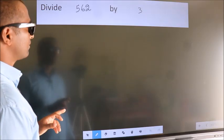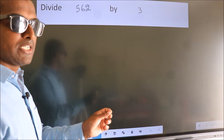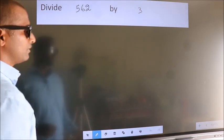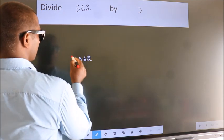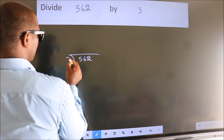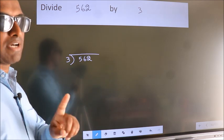Divide 562 by 3. To do this division, we should frame it in this way. 562 here, 3 here. This is your step 1.